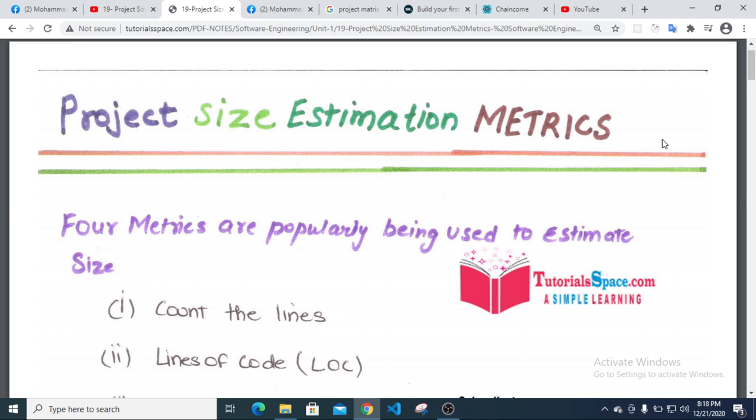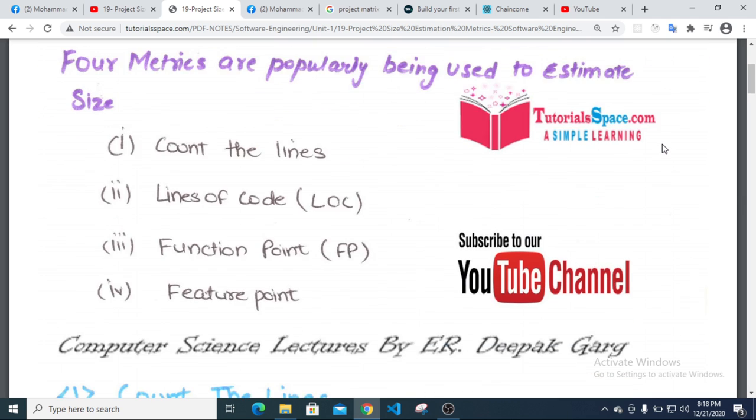Let me see: count the lines, lines of code, function point, and feature point. How do the features, functionality, and lines of code work? These are used to define the project size.